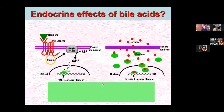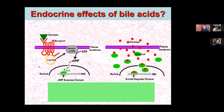Can we call bile acids endocrine molecules? Many people think that we really can. The reason is that they behave as hormonal substances. This picture from an endocrinology textbook shows the cell membrane, plasma membrane, and nucleus — hormones bind to receptors located either on the plasma membrane or within the cytoplasm or nucleus. Bile acids can really act in distant tissues, organs, and cells.